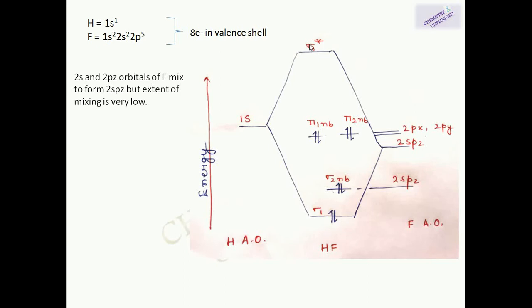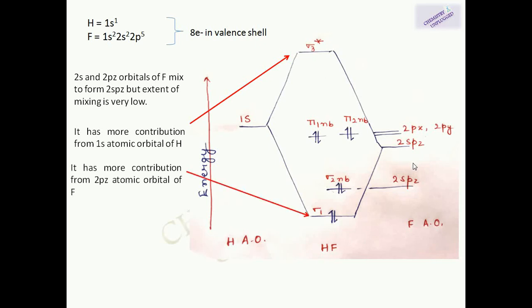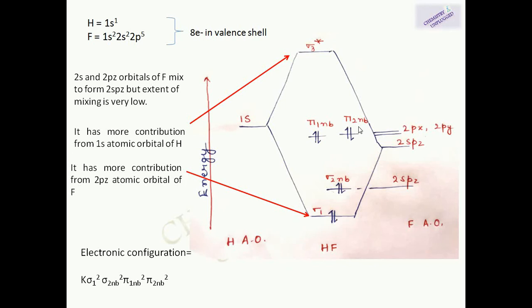The lower-energy 2spz atomic orbital of fluorine cannot combine with the 1s atomic orbital of hydrogen because of the higher energy gap, so it remains non-bonding. The 2px and 2py atomic orbitals of fluorine also remain unchanged and non-bonding, forming pi 1 and pi 2 non-bonding molecular orbitals. The 8 electrons fill: 2 in sigma 1 (bonding), 2 in sigma 2 nb (non-bonding), and 4 in pi 1 and pi 2 (non-bonding). The bond order is 1/2 × (2 − 0) = 1.